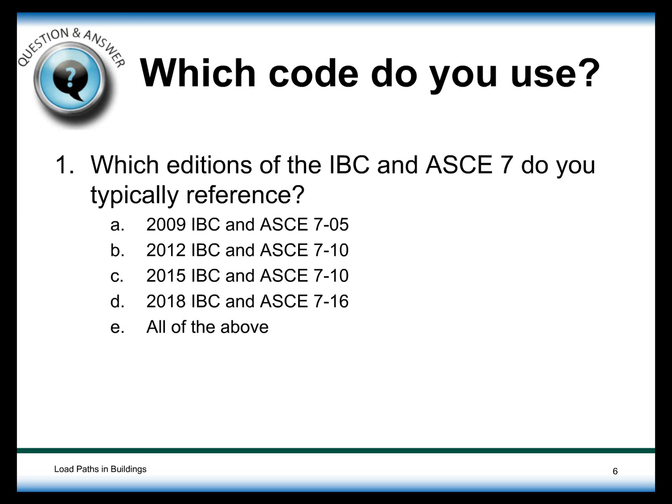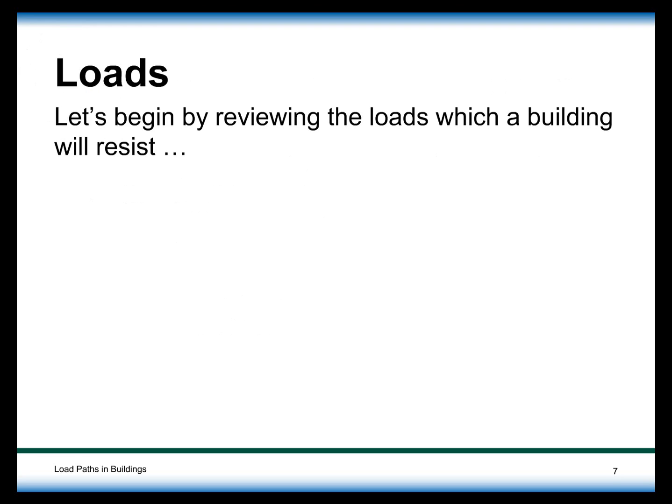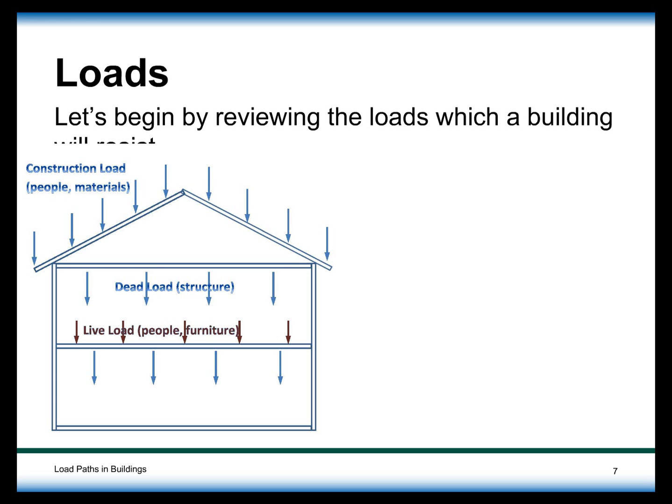Let's start by looking at the loads occurring in a building. At the roof level, there is a construction load — basically a load assumed to be present if someone is reroofing, doing repairs, or performing maintenance on structures placed on a roof, such as HVAC systems and anything else up there. With newer garden roofs, there are additional elements that didn't used to be on roofs that also require maintenance.